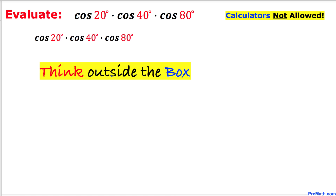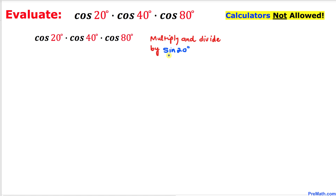Since we are not supposed to be using calculators, we are going to think outside the box. We are going to multiply and divide by sine of 20 degrees. So let's go ahead and multiply and divide by sine of 20 degrees. You might be wondering why I did that — I will explain it to you momentarily.